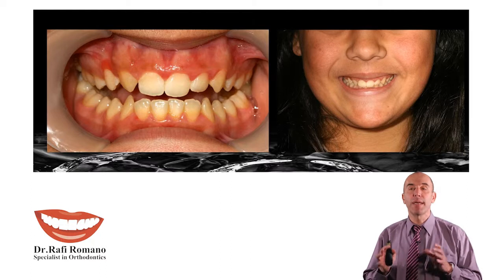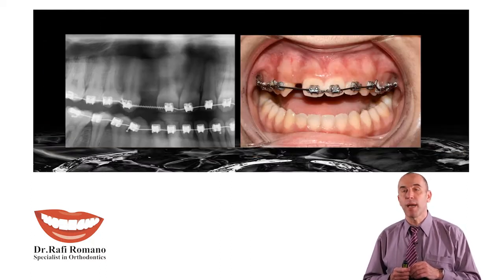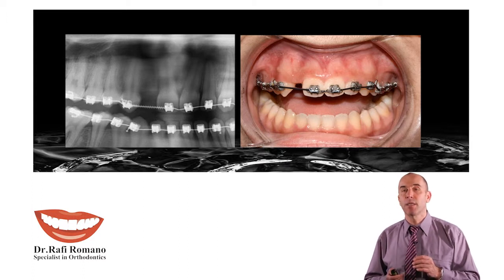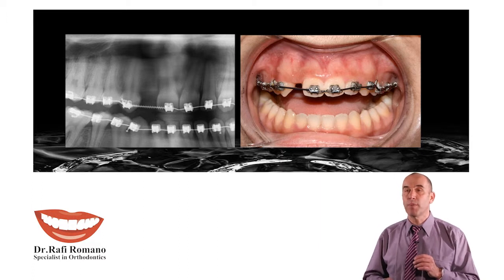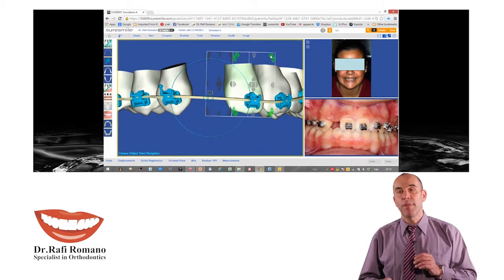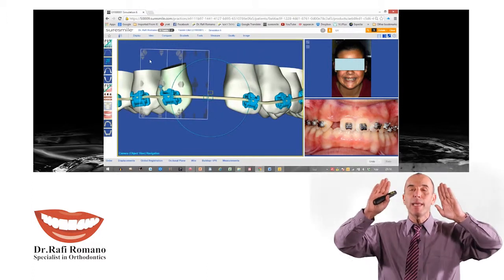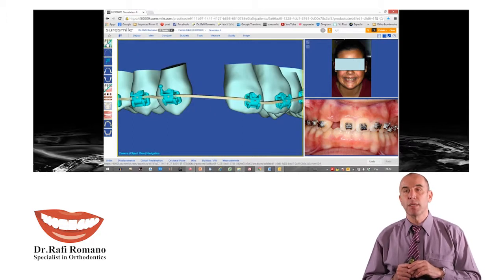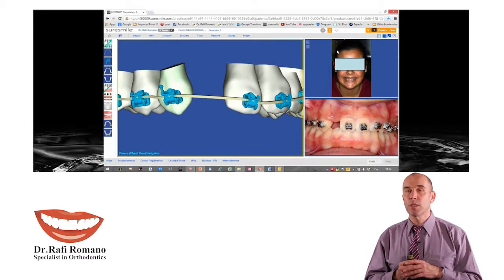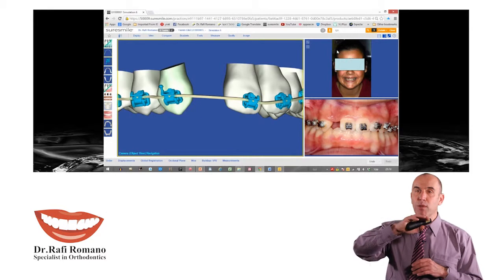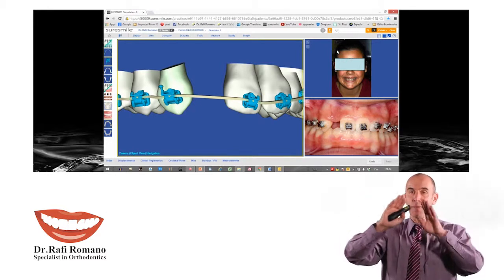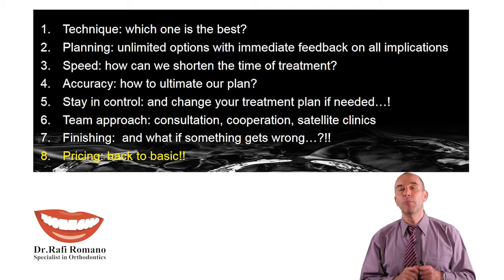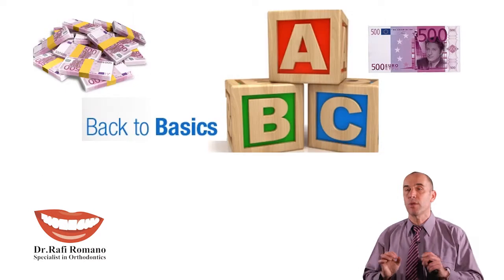Finishing — what if something goes wrong? Here is a case where I used SureSmile to open space for an implant replacing a missing upper right lateral incisor. Although the space was opened, the roots were still slightly tilted and needed uprighting before placing the implant. Very easily, I go to the software myself, do the tilting, and the wire is automatically recalculated. I press enter and receive new wires that perform only that movement without disturbing the rest of the teeth that already looked good.